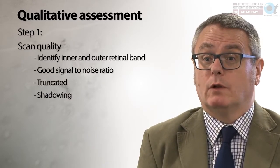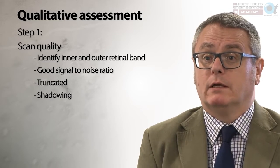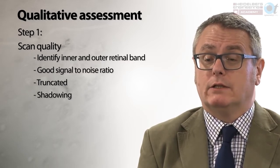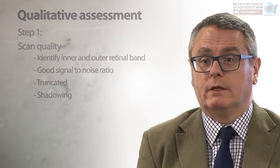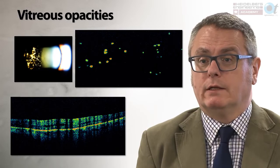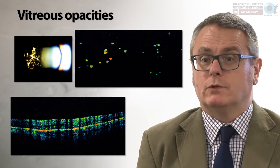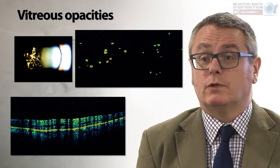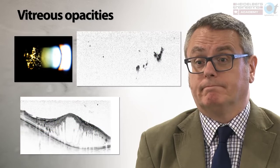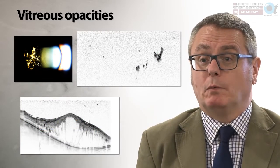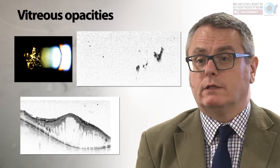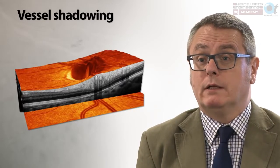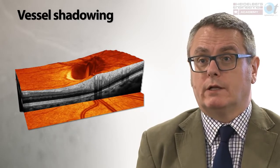When looking at overall scan quality, identify inner and outer retinal bands, check for a good signal-to-noise ratio, good laminar structure, confirm the scan is not truncated, and look for any obvious shadowing. Shadowing is illustrated by an old time-domain OCT of a patient with asteroid hyalosis — the asteroid bodies within the vitreous cast profound shadows across the cross-section. With spectral domain OCT this is less of a problem but artefacts can still occur. Normal anatomical structures, particularly large vessel trunks when scanning close to the papilla, can also cause dense shadows.